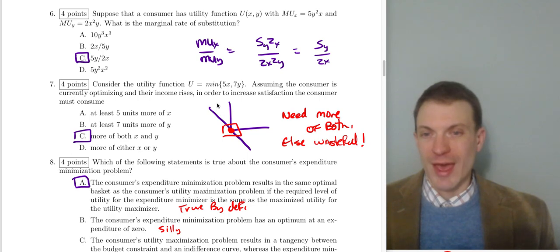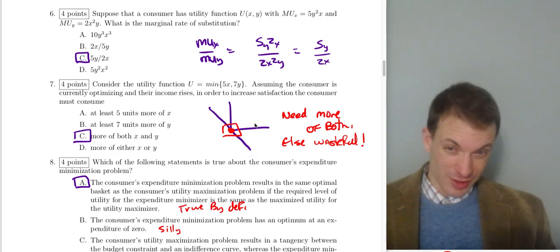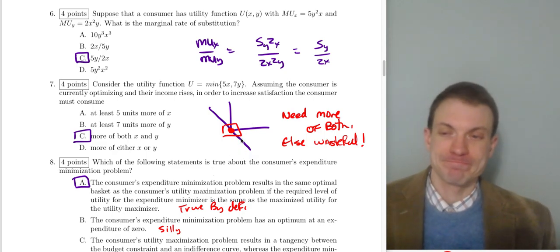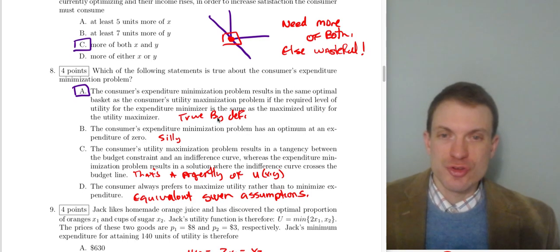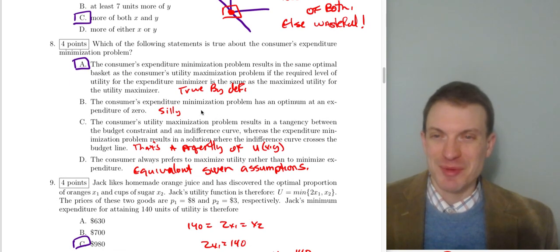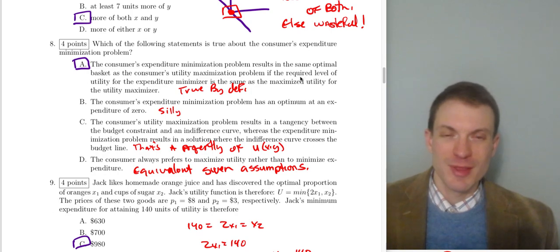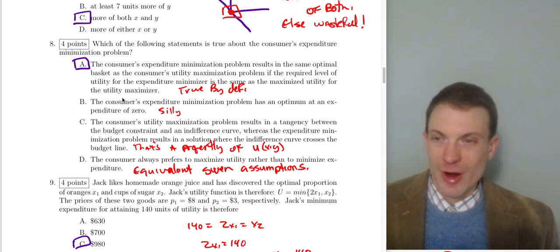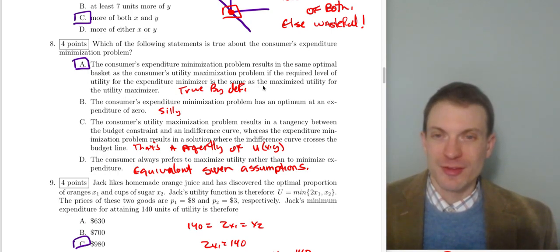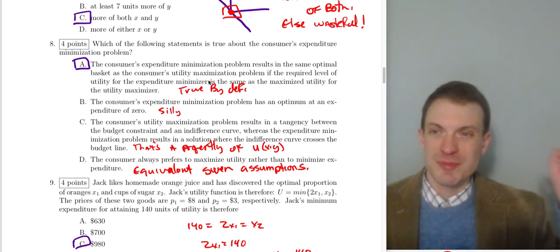The budget constraint shifts out and you move to another indifference curve. Question seven: which statement is true about the consumer's expenditure minimization problem? Option A is true by definition: the consumer's expenditure minimization problem results in the same optimal basket as the utility maximization problem, provided the required utility level for the expenditure minimizer equals the maximized utility for the utility maximizer. The expenditure minimization problem gives us the same basket when we're trying to hit the same level of utility.